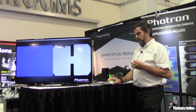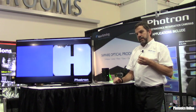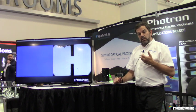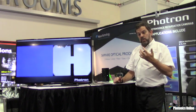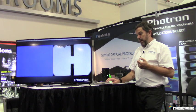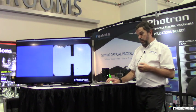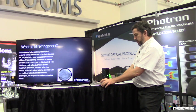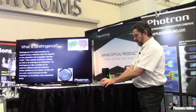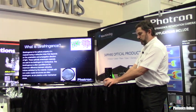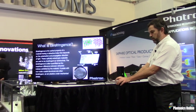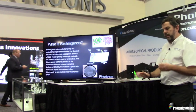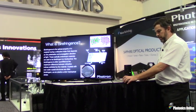Crystalline materials can be defined as either isotropic, where light passes through the material unaffected — such as with glass, regardless of the optical axis or angle it enters. We have an example here showing sodium chloride versus calcite, and in the bottom slide we can see calcite, which is what we call an anisotropic material.